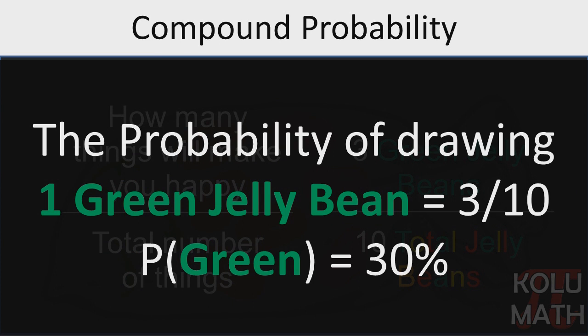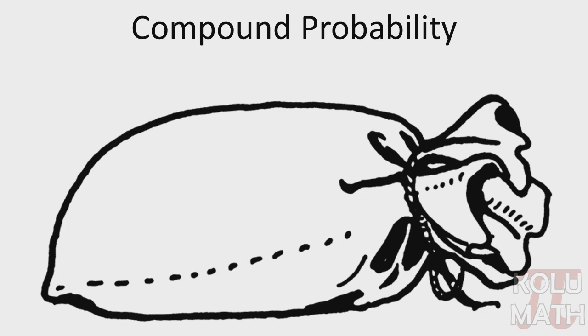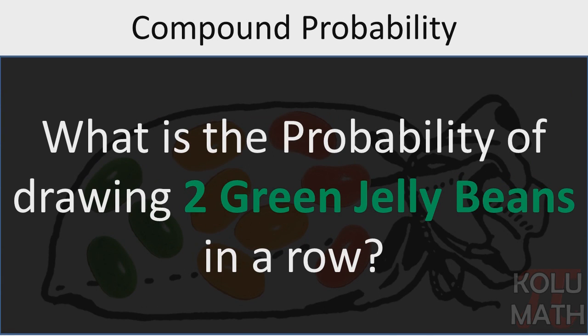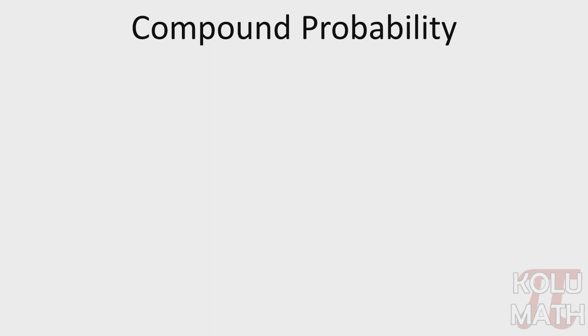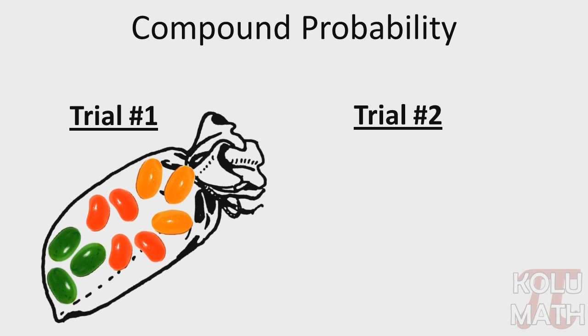Well, let's check out the type of problem we'll be looking at today. What is the probability now of drawing two green jelly beans in a row? So let's start thinking about this. We'll begin with this question: How many times are you repeating this test? Or how many trials are we having here? Since we're trying to draw two beans in a row, we have two separate trials. In the first trial, we have the bag with ten beans, three green.